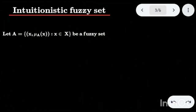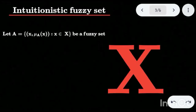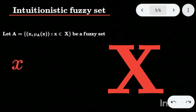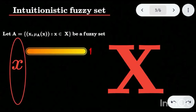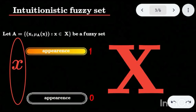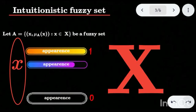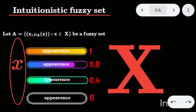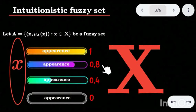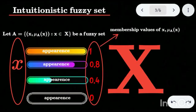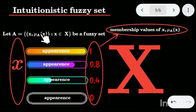Today we are going to talk about the intuitionistic fuzzy set. We already know the fuzzy set — consider the universal set X and an element x. We examine how much x appears in X. If the appearance is fully present, we give membership value 1; if totally absent, membership value 0. For intermediate cases, the membership value depends on the point of view — for example, 0.8, 0.7, 0.4, or 0.5. These values are called the membership values of x, denoted μ_A(x). So the fuzzy set is the ordered pair (x, μ_A(x)).